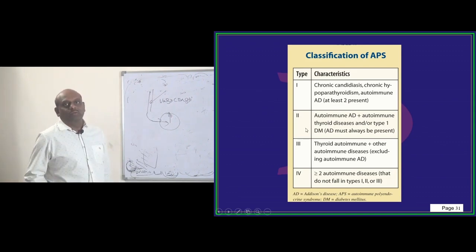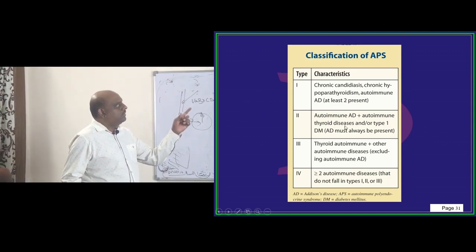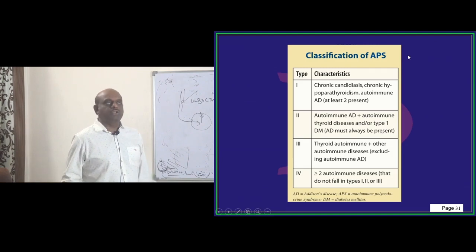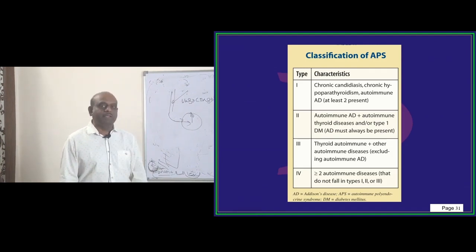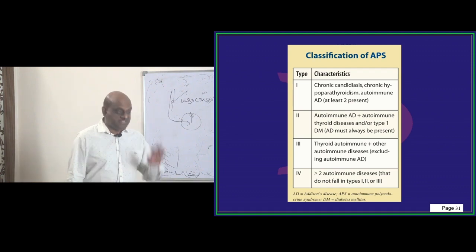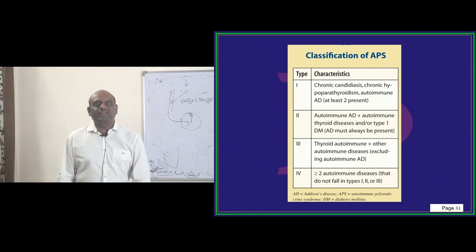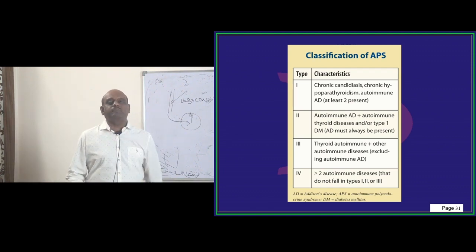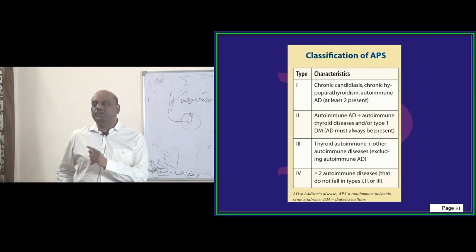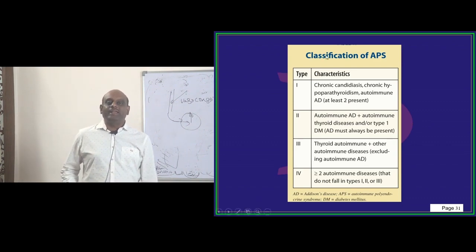Type 2: you have Addison, hypocortisolism. Patient is hypotensive, asthenic, hyperpigmented, oral candidiasis, hypocalcemia because of that tetany. One case of polyglandular endocrine autoimmune syndrome if you see, you'll never forget it in life.